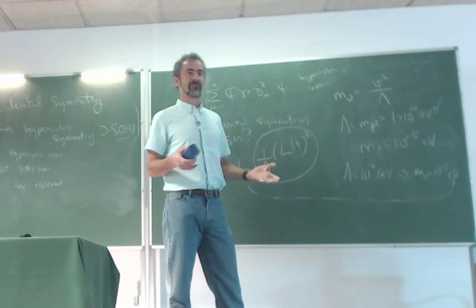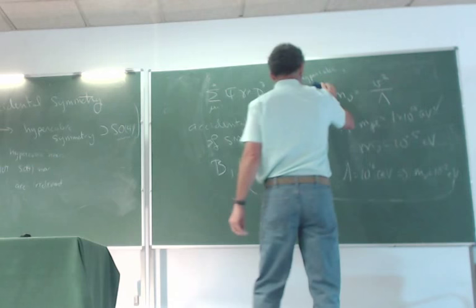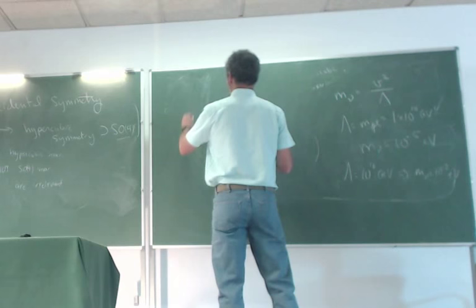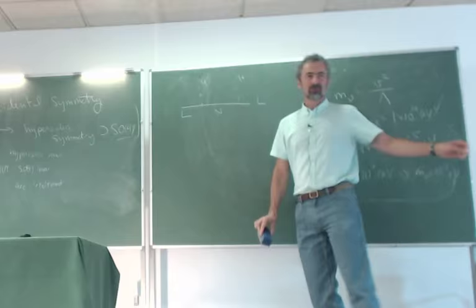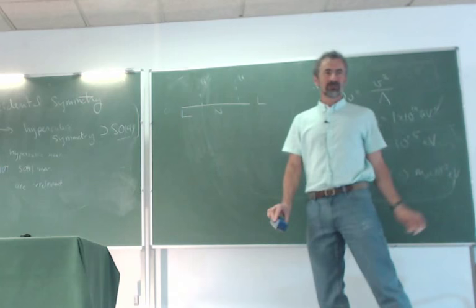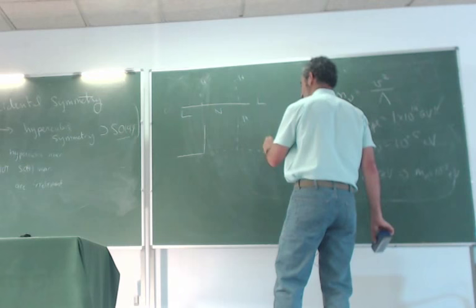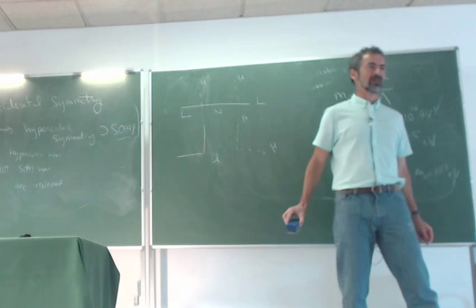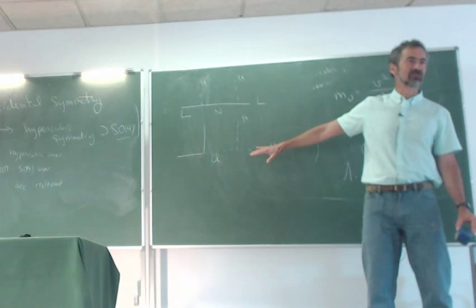This incorporates the seesaw mechanism: a heavy right-handed neutrino generates an irrelevant operator, so the light neutrino mass goes inversely proportional to the new physics scale. There are really only two ways to generate this dimension-5 operator: (1) a right-handed neutrino N (fermion exchange with L H), leading to the type-I seesaw, or (2) a heavy SU(2) triplet scalar (scalar exchange with L L), the type-II seesaw. The right-handed neutrino scenario is more compelling since SO(10) naturally includes it.